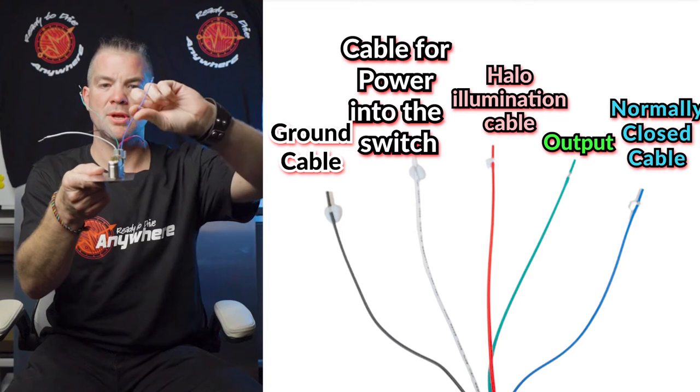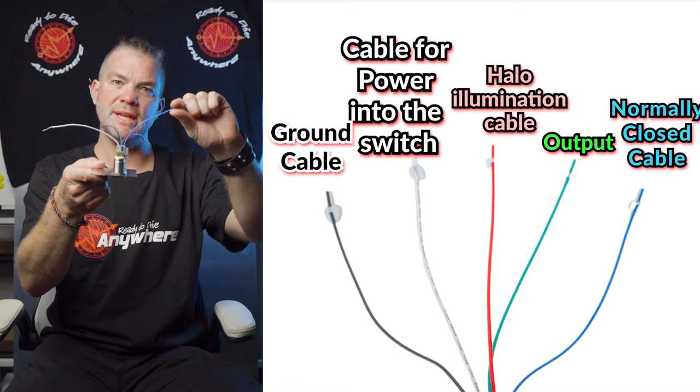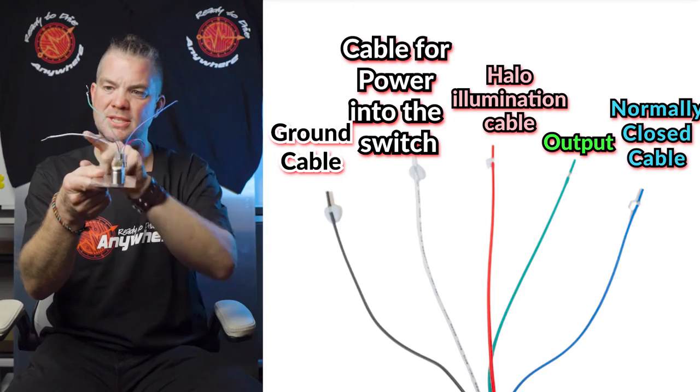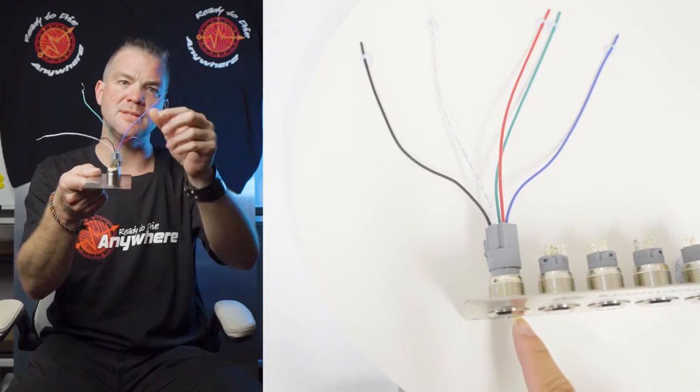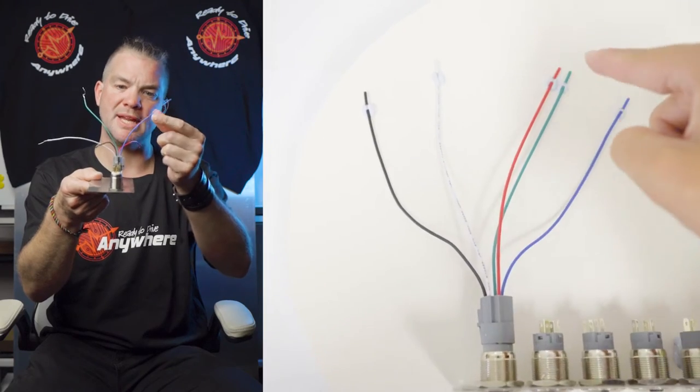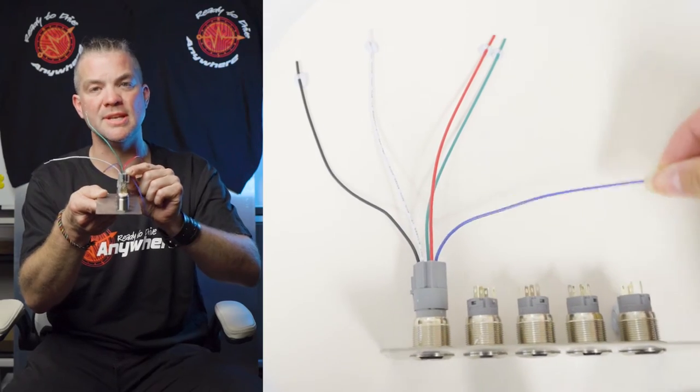The blue cable is the normally connected, so it means as soon as you give power to the white cable and the switch isn't pressed, the blue cable gets power. What we usually do is we cut this off because for switch action you usually don't need that unless you have a changeover switch.